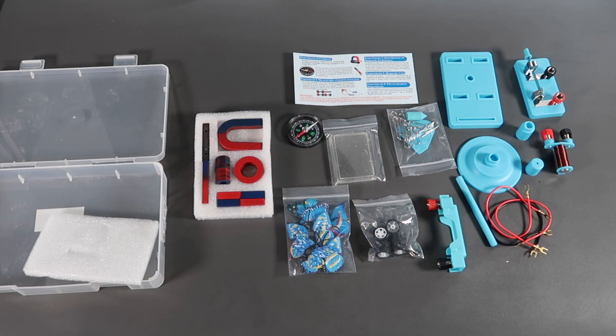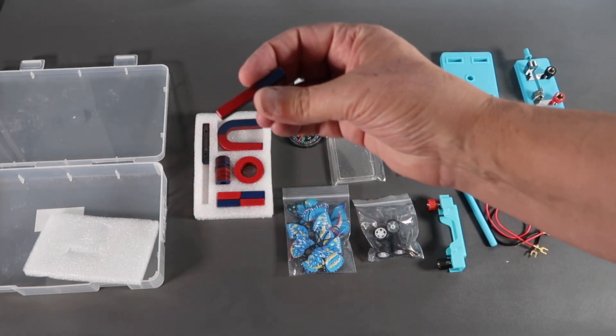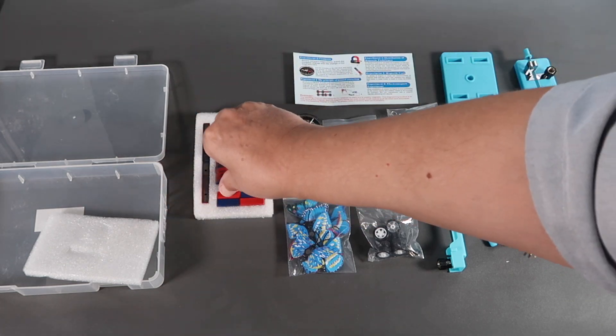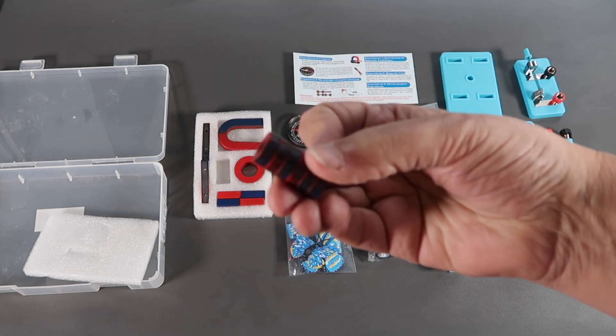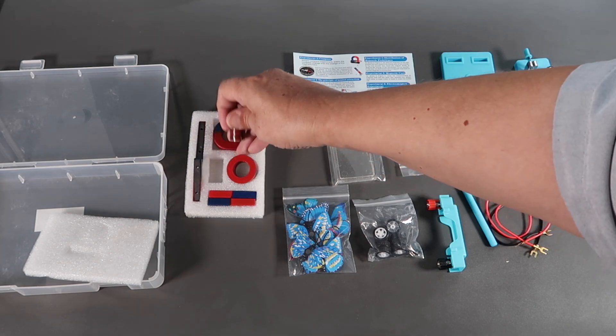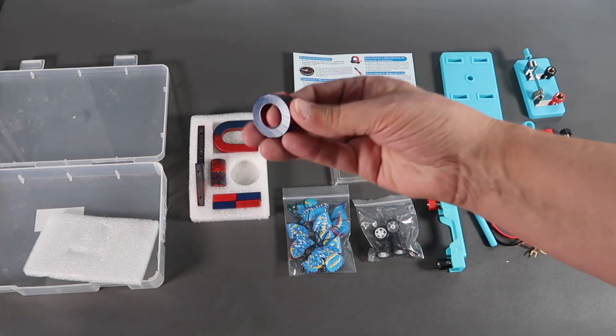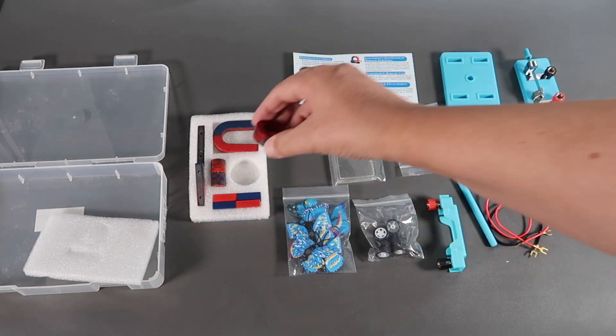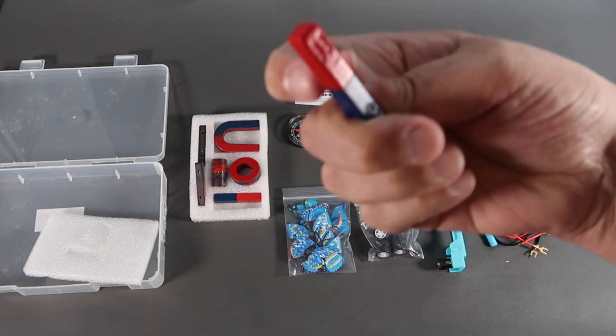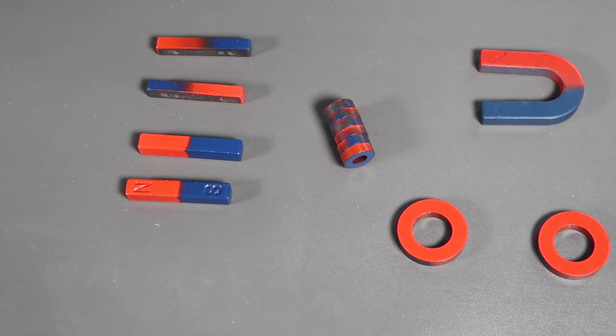And finally we have the magnets themselves. The U-shaped magnets, a couple of bar magnets, a couple of circular magnets, and some more bar magnets. So these are the different types of magnets we have.